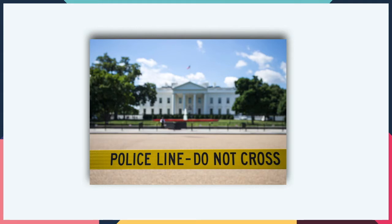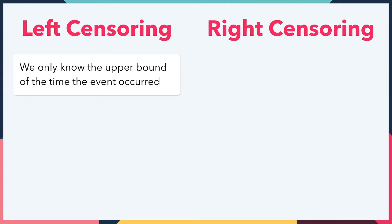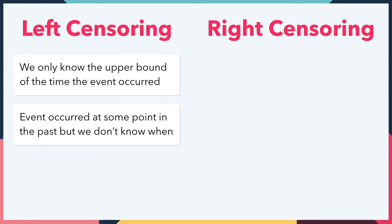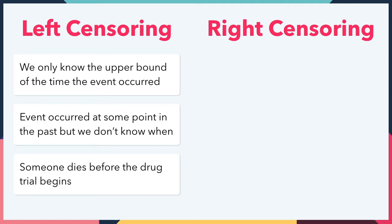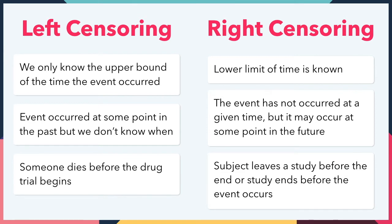There are different types of censoring. Two commonly discussed ones are left censoring and right censoring. Left censoring is when we only know the upper bound of the time the event occurred — that is, the event occurred at some point to the left of time, in the past, but we don't know exactly when. For example, in a medical study, someone dies before the drug trial begins. Whereas right censoring is when only a lower limit of the time is known. We know the event has occurred at a given time, but it may occur at some point in the future, or to the right of time — for example, if a subject leaves a study before the end, or the study ends before the event occurs.